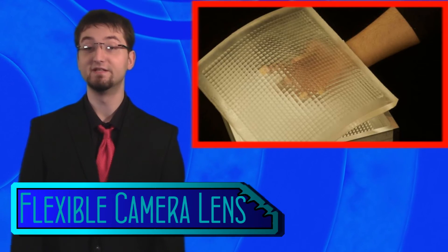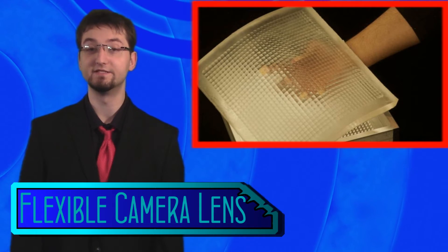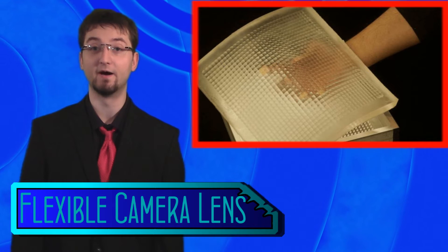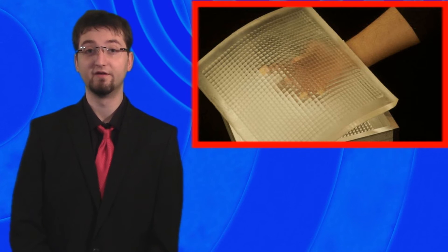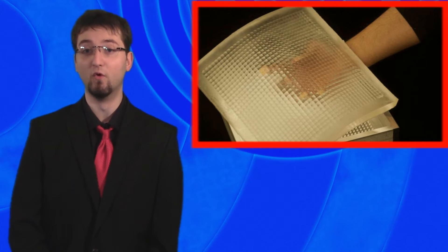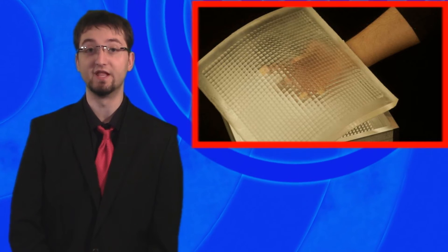Scientists at Columbia University have been attempting to develop a camera lens that can see 360 degrees and become flexible. In the past, flexible lenses have been attempted. However, there usually is interference or blockage from the structure of the lens itself.